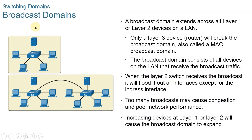Broadcast domain. A collection of interconnected switches forms a single broadcast domain. Only a network layer device such as a router can divide a layer-2 broadcast domain. Routers are used to segment broadcast domains, but will also segment a collision domain. When a device sends a layer-2 broadcast, the destination MAC address in the frame is set to all binary ones. The layer-2 broadcast domain is referred to as the MAC broadcast domain, which consists of all devices in the LAN that receive broadcast frames from the host.